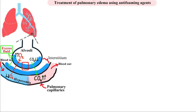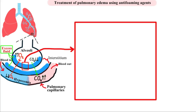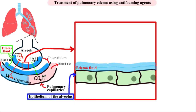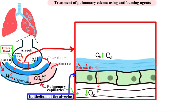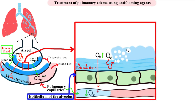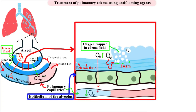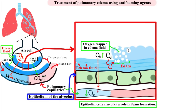Let's zoom on a small portion of one alveolus and the excess fluid in it. Here you can see the epithelium of the alveolus. When the molecules of oxygen pass through this layer of fluid they can form foam. Foam is a dispersed medium formed by trapping pockets of gas in a liquid or solid. In this case we're trapping oxygen in the edema fluid. Epithelial cells also play a role in foam formation.